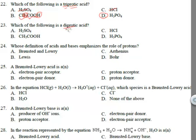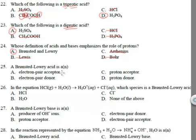Which of these is diprotic? You're looking at two protons — sulfuric acid H2SO4 is diprotic. HCl is monoprotic, H3PO4 is triprotic. Whose definition of acids and bases emphasizes the roles of protons? Bronsted-Lowry. For Bronsted-Lowry you look at proton donation or acceptance; for Lewis you look at electron pair acceptance or donation; for Arrhenius you look at hydrogen or hydroxide. A Bronsted-Lowry acid is a proton donor.